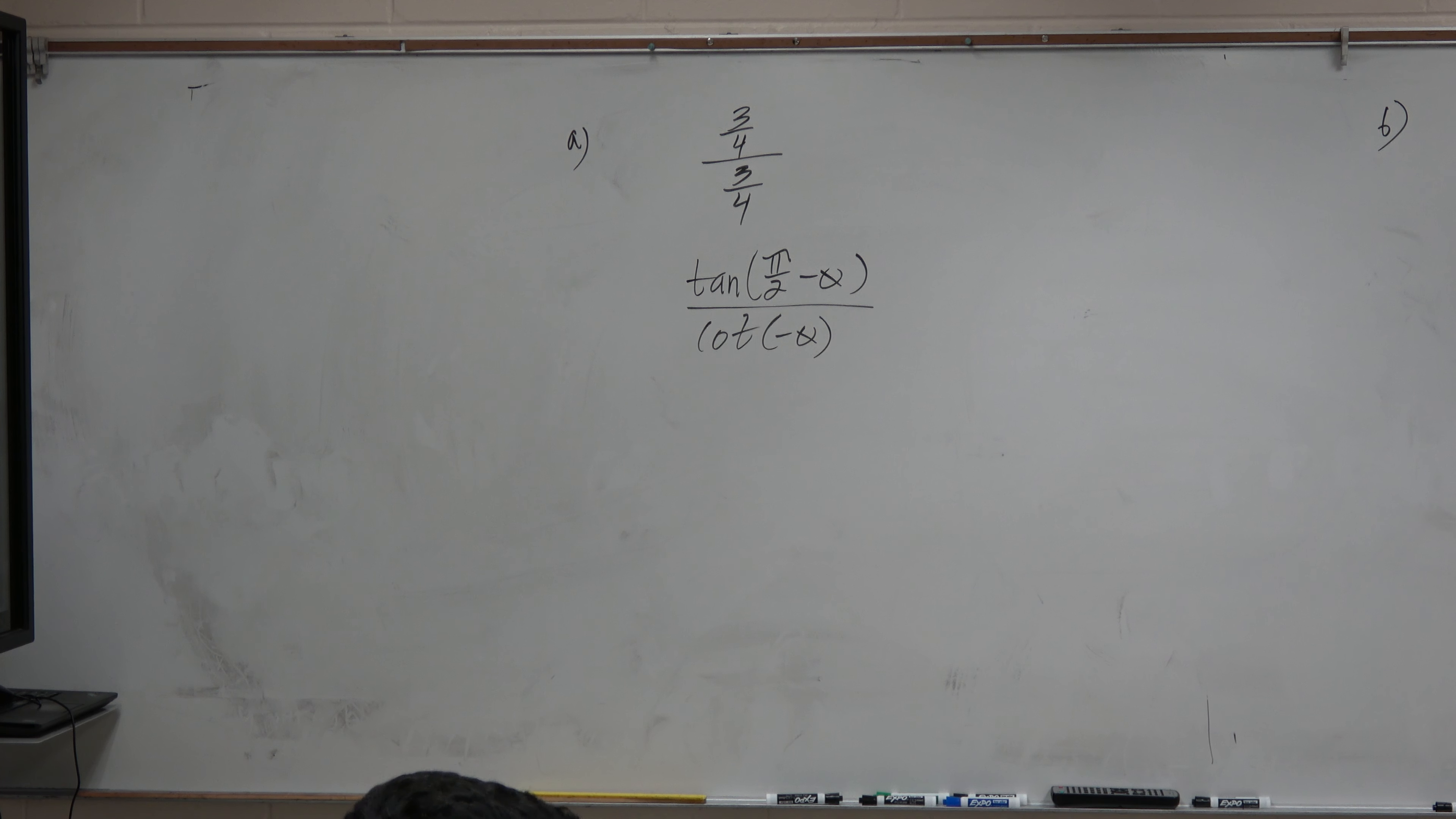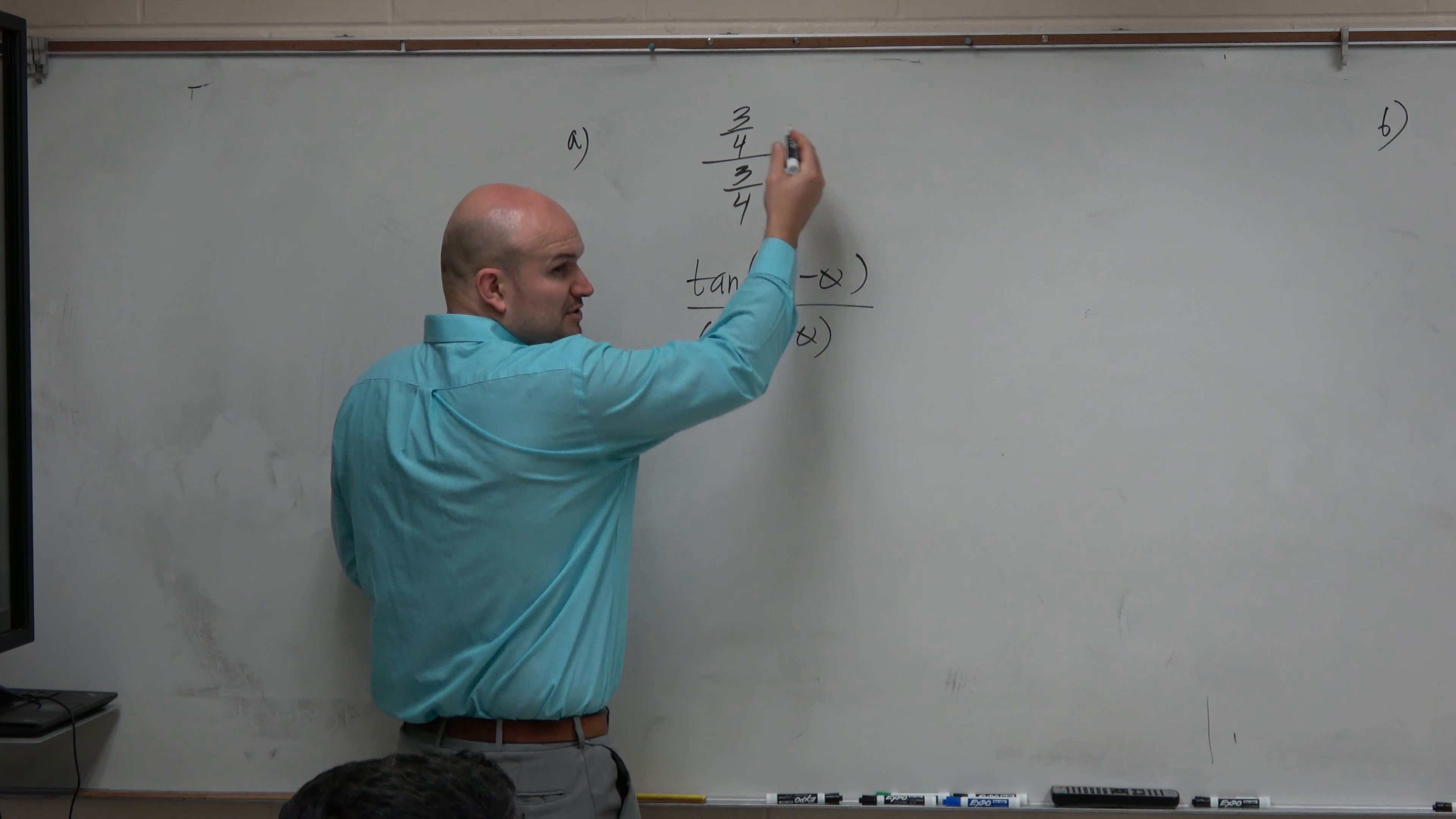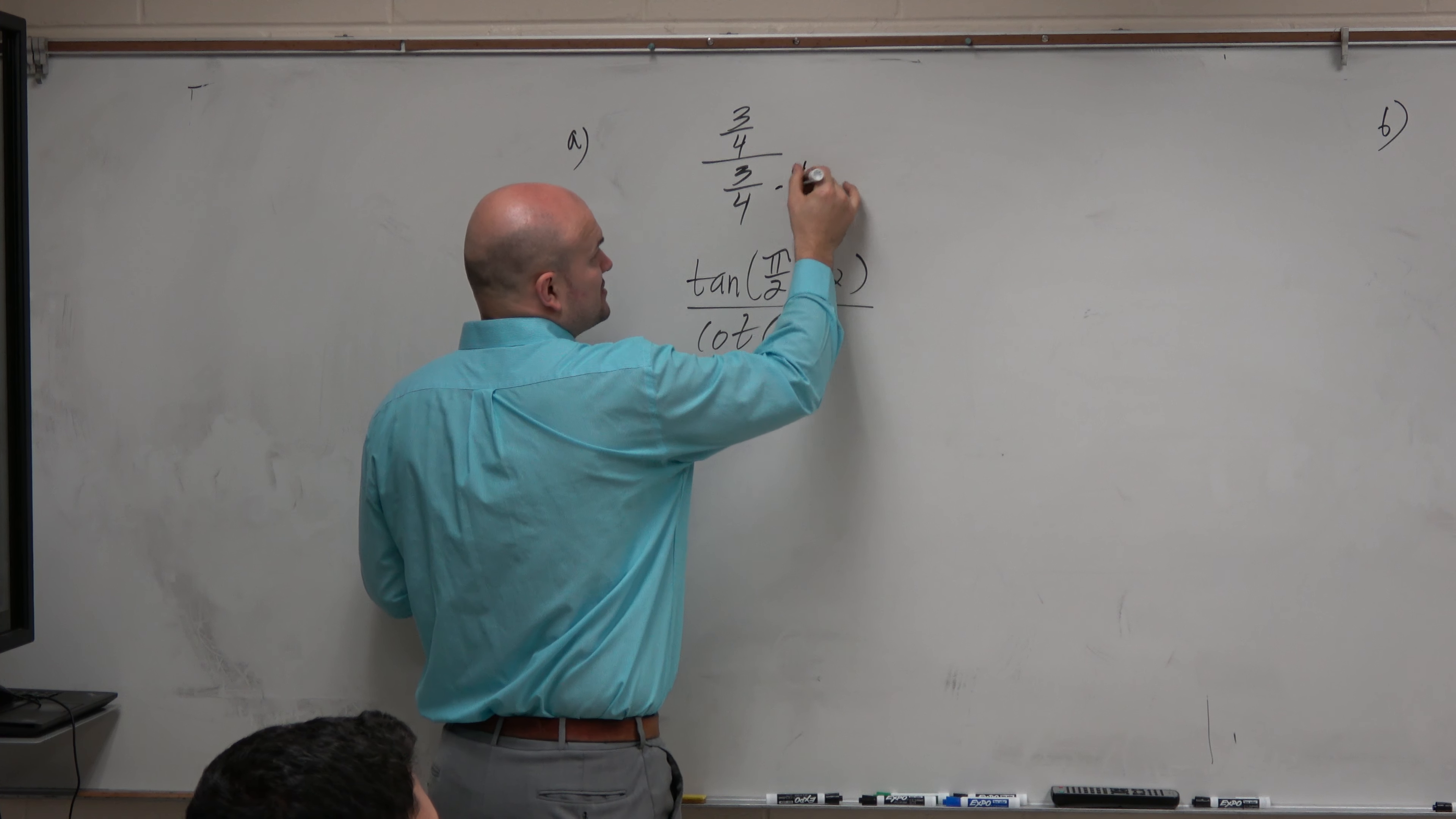For this example, it's fairly simple because I have 3 fourths divided by 3 fourths. I could multiply by the reciprocal, because when you're dividing by a fraction, you can multiply by the reciprocal.